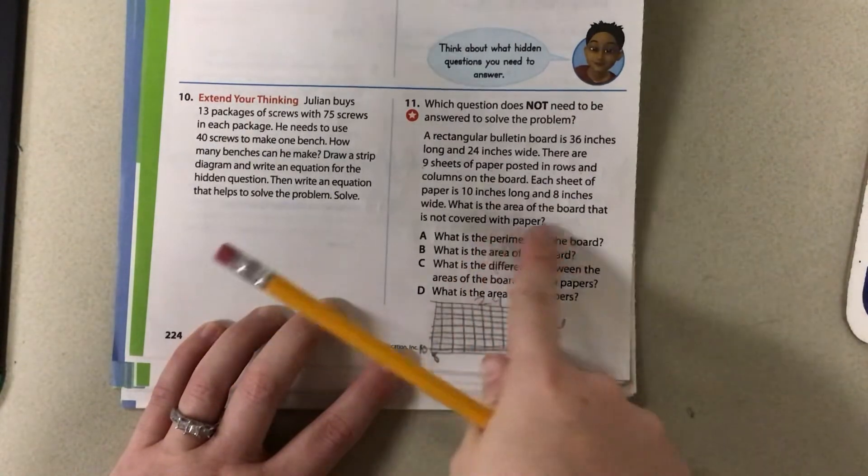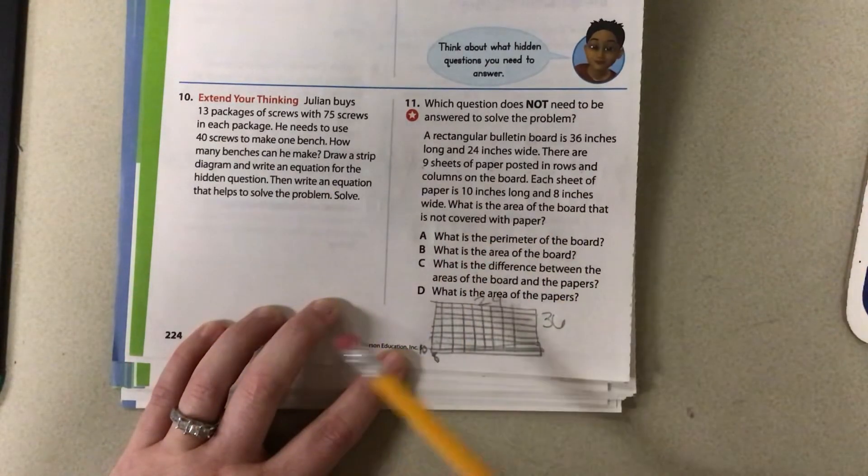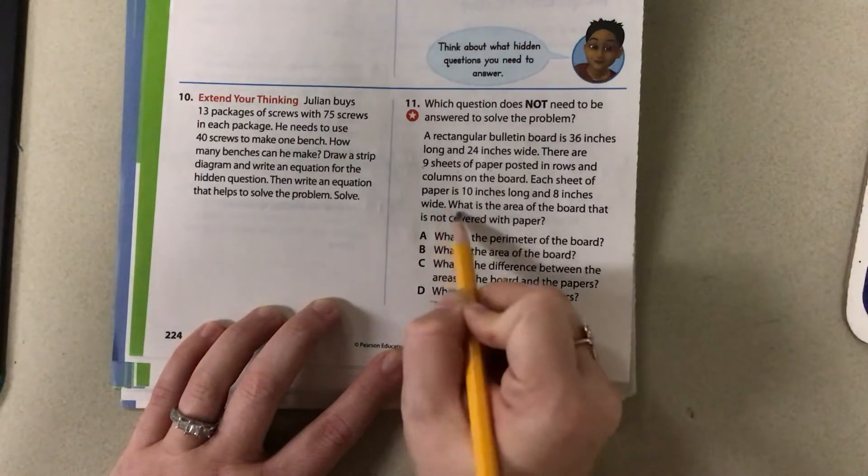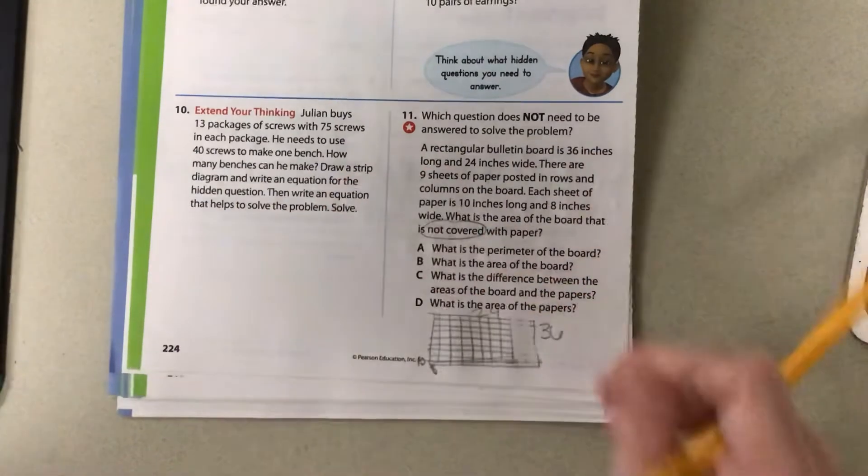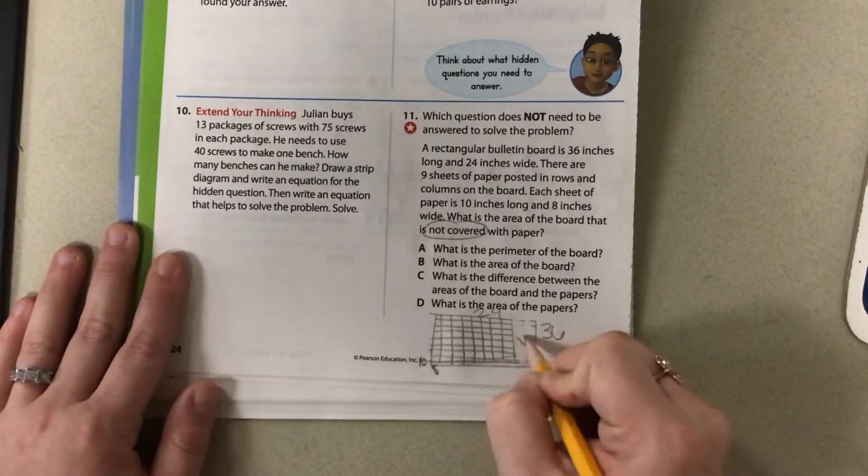So I want to know the area that is not covered by paper. So I'm guessing if it's not covered by paper, then some of this, let's say this section here, doesn't have any paper. So I'm looking for this information.